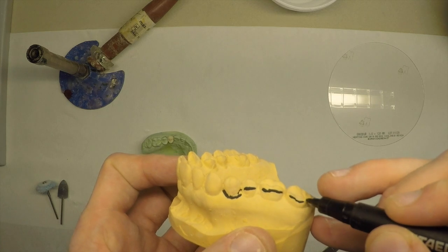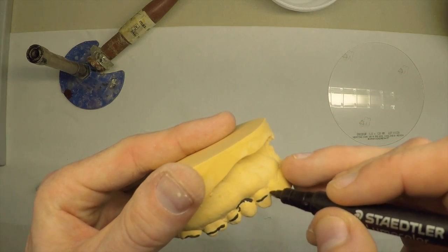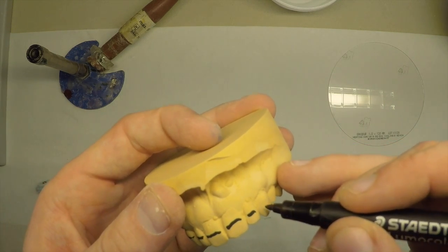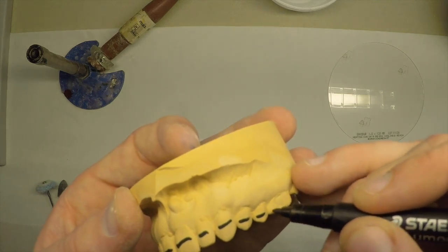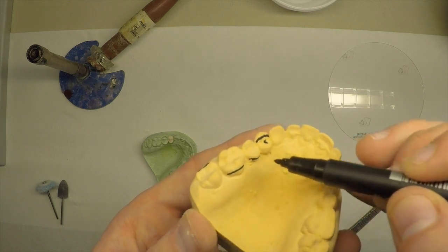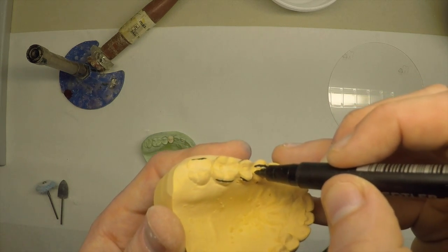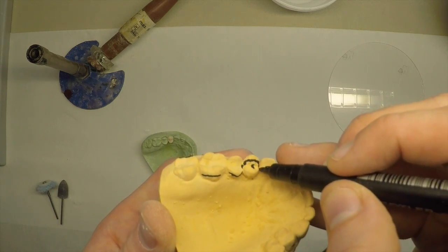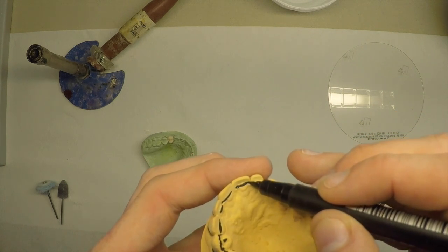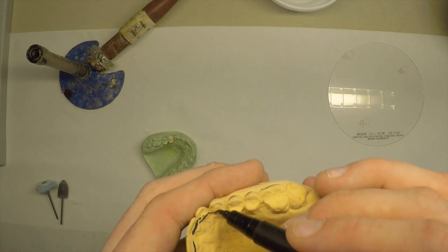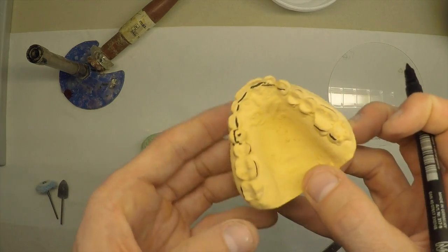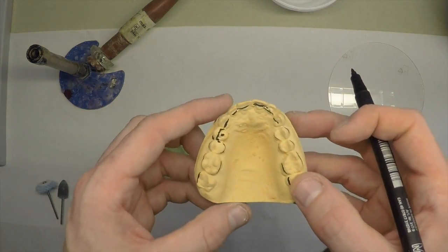We want to do this so that if we do have a large flap, our stent is not going to be in the way of that. When we come under the tooth that we're doing, we're actually going to follow up to that line, just buckle of the access hole. And now we're ready to make the pull down.